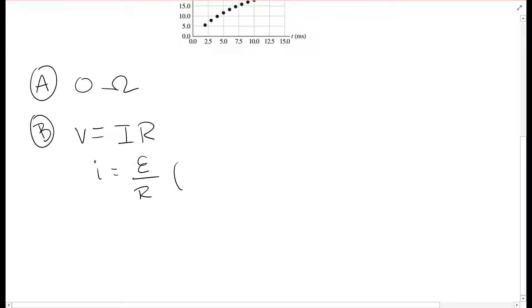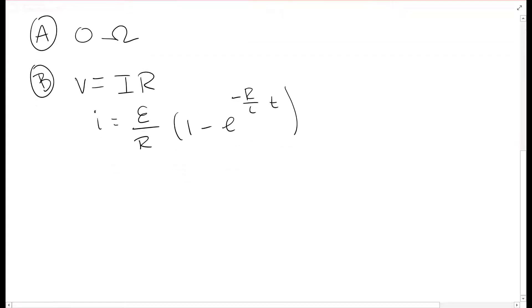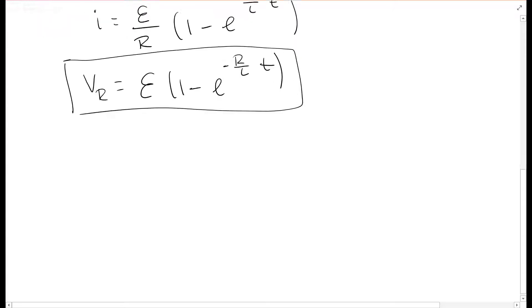There's Emf over resistance times 1 minus E to the negative R over LT, and we go ahead and multiply that by R, then the R's cancel out, and this is what you end up getting for B. That's your Vr, your voltage in the resistor.